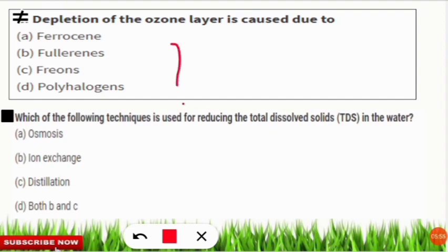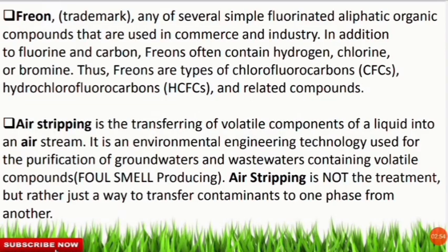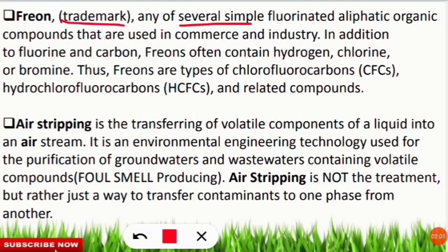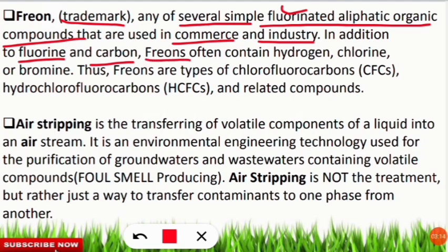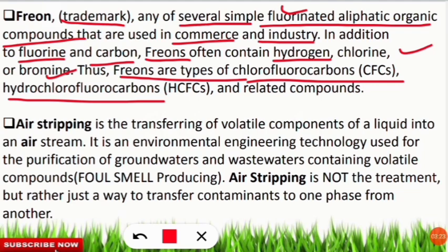The next question: which chemical is responsible for ozone layer depletion? The correct option is C — freons. Freons are a trademark and consist of several simple fluorinated aliphatic organic compounds used in commerce and industry. In addition to fluorine and carbon, freon compounds often contain hydrogen, chlorine, or bromine. Thus freons are types of chlorofluorocarbons and hydrofluorocarbons, which are responsible for ozone layer depletion.